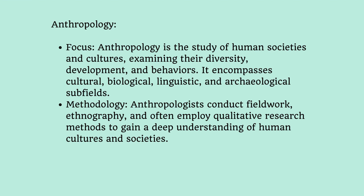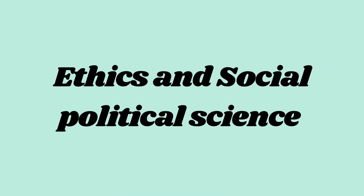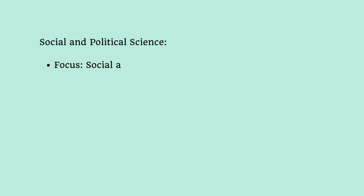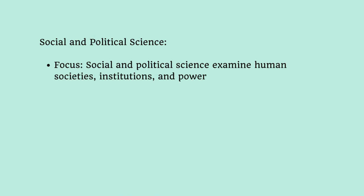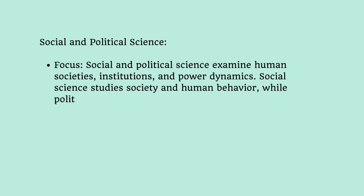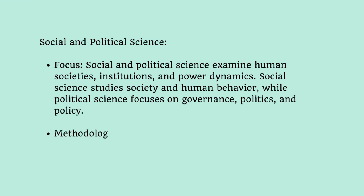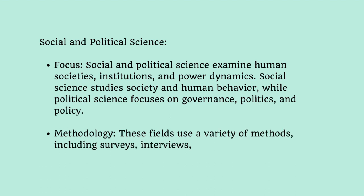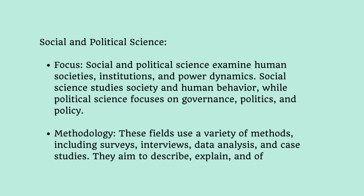Moving to ethics and social-political science: the focus examines human society, its institutions, and power dynamics. In social studies, we study society and human behavior, while political science is more focused on government, politics, and policies. The methodology uses a variety of methods including surveys, interviews, data analysis, and case studies — very different from ethics, where we use critical thinking, analysis, and philosophical methods.